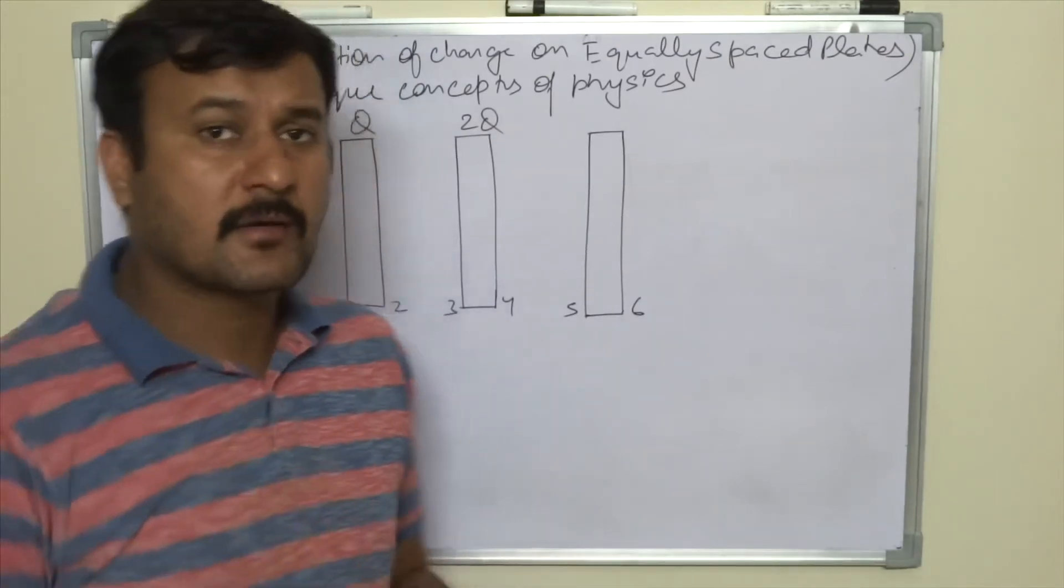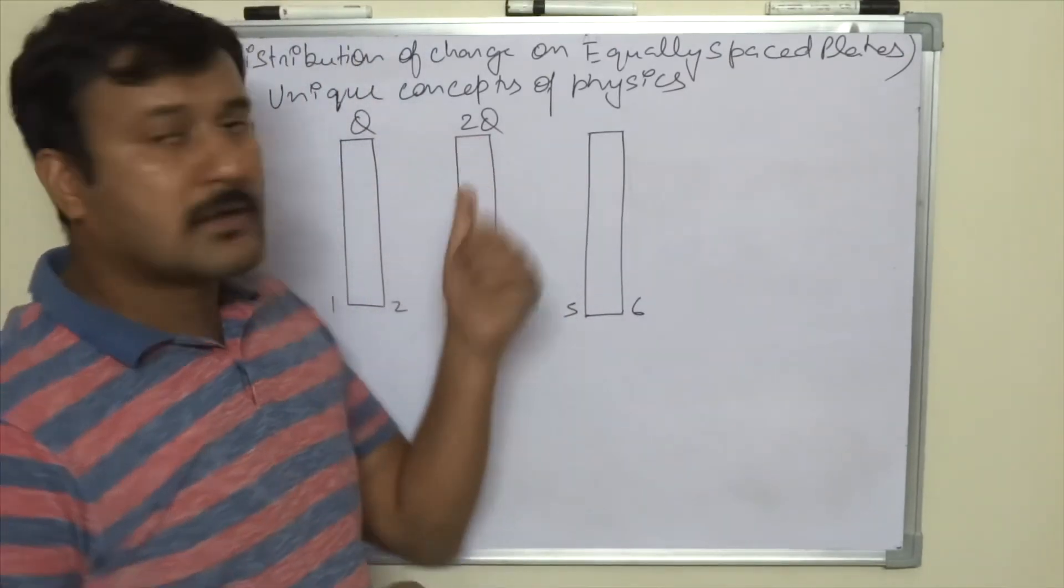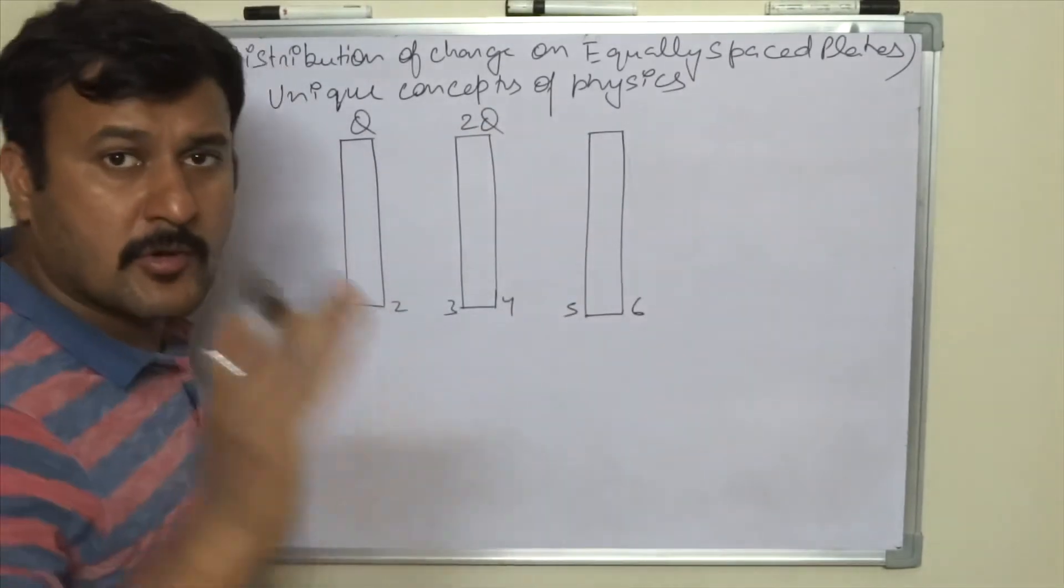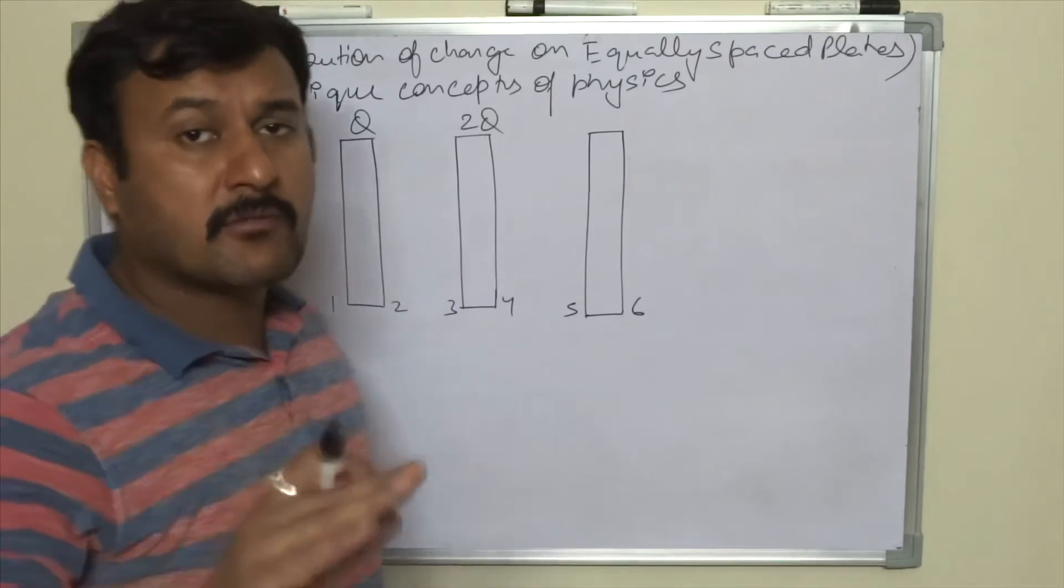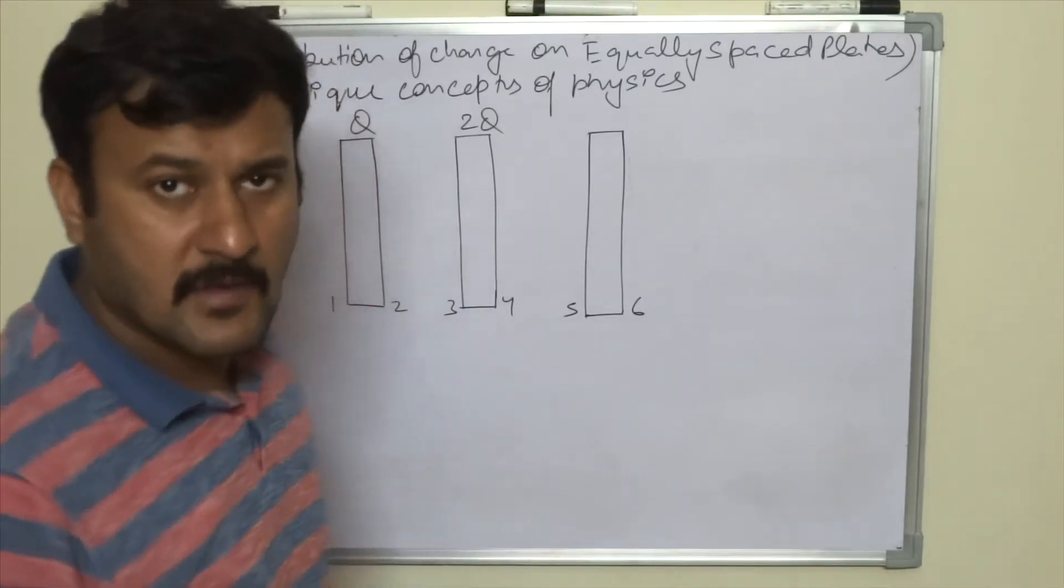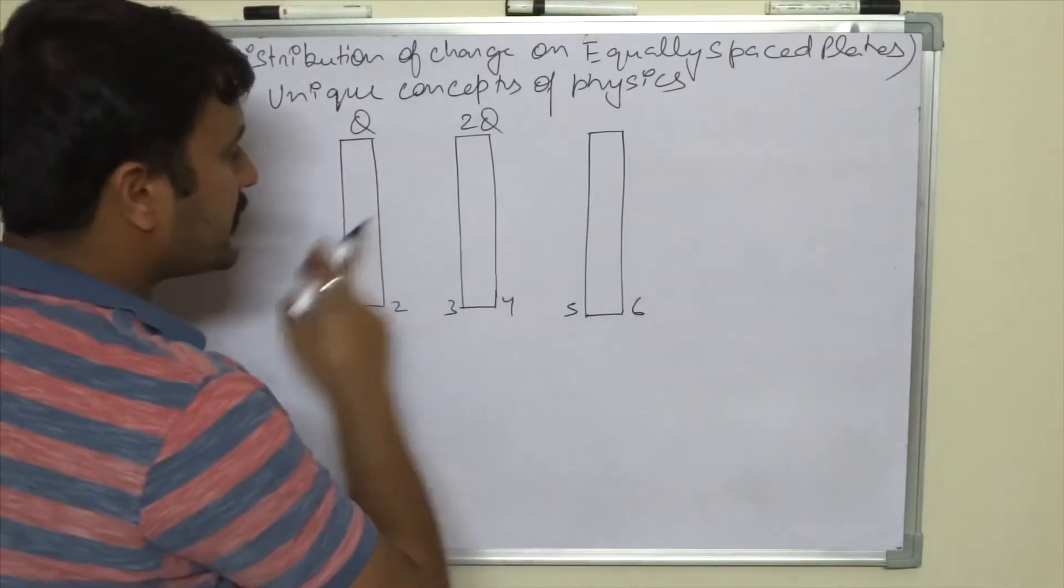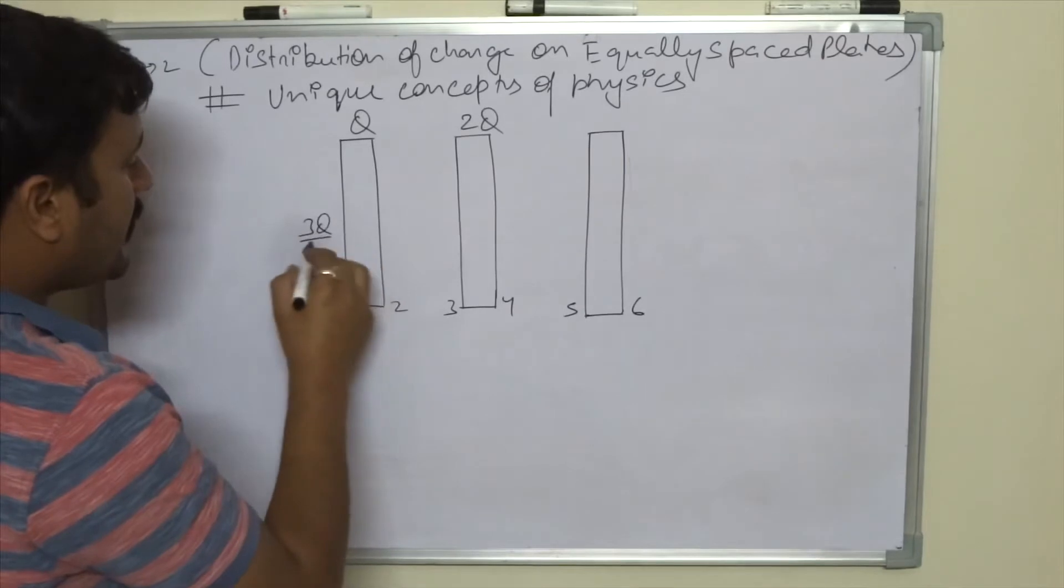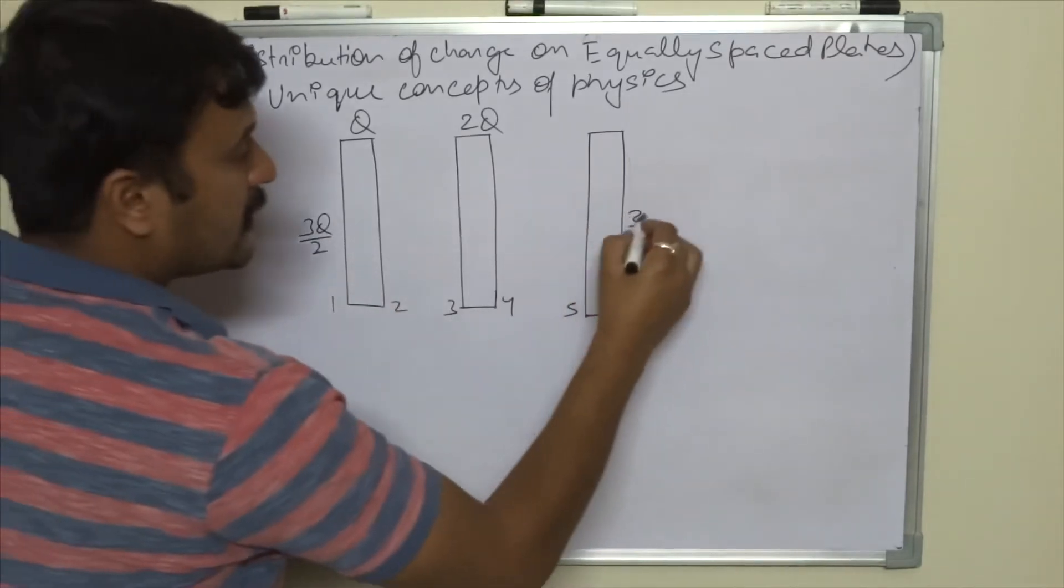If you divide in two parts, each equal part would be 3Q by 2. So you have to distribute those equal parts on the outermost surfaces of the system. There are two outermost surfaces of the system: you have to distribute 3Q by 2 here and 3Q by 2 here.